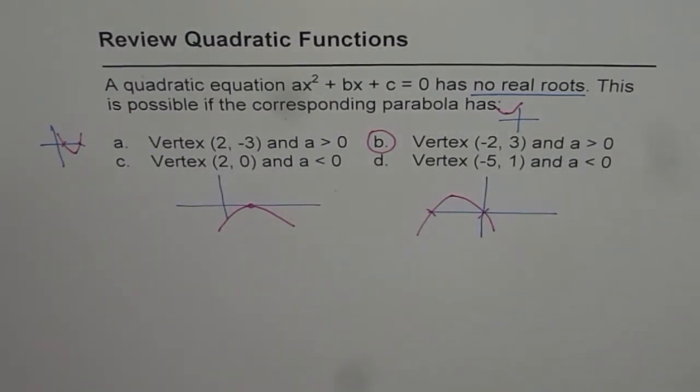So you can see B is the right option where the vertex is (-2, 3) and a > 0. Thank you.